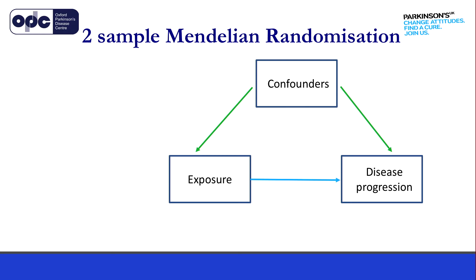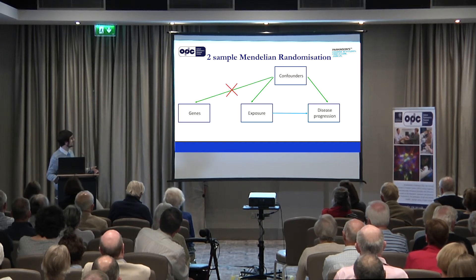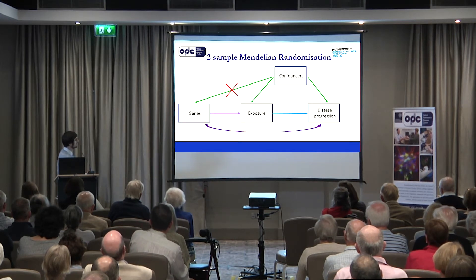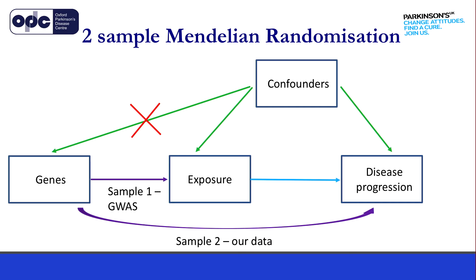Going back to the confounder problem — we also have genetic information on all of the people in our study. Because of the law of Mendelian inheritance, we know these are randomly assigned and there are no confounder problems. Here's the really clever part: we can take the association between genes and exposure and genes and disease progression — these purple arrows — and using those, we can estimate this blue arrow, the effect of exposure on disease progression, which is what we really want to know about. And the reason why it's called two-sample is because generally we look at one association in one sample, and the other association in another sample.